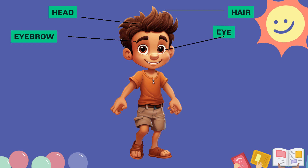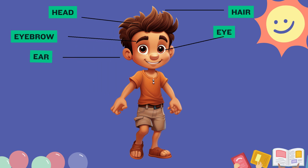Eyes. Eyes are the sensory organs that allow you to see. Ear. An ear is the organ that enables hearing.